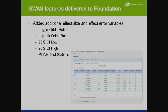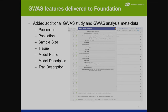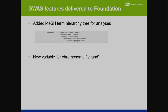This is a bit more technical, and these are all requirements from specific scientists. We added log e odds ratio, log 10 odds ratio, 95% confidence low and high, and plink test statistic. We also added additional metadata fields: publication, population, sample size, tissue, model name, model description, and treat description. We also added a MeSH term hierarchy tree within the analysis metadata tag — it's very easy now to look at the diseases. And we added a new variable for chromosome strand.